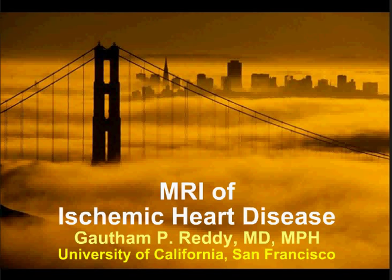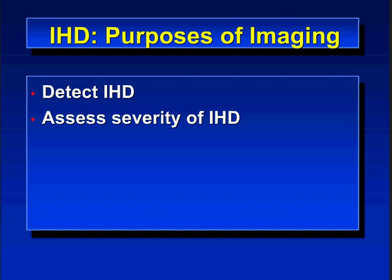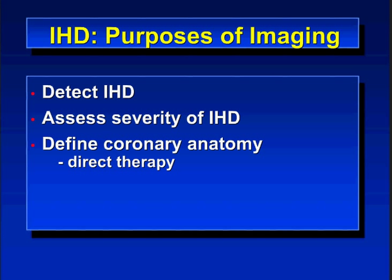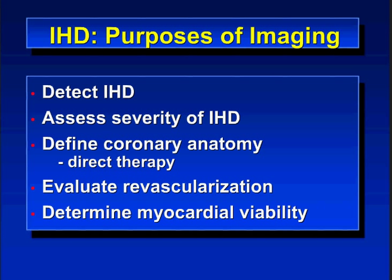This talk is about the MRI of ischemic heart disease. I'm not going to try to cover all topics in just 20 minutes, but I will cover what I think are some of the more important aspects. The purposes of imaging in ischemic heart disease are to detect disease, assess its severity, define coronary anatomy, and direct therapy. Cardiac cath is useful for directing therapy, and MR has the ability to evaluate revascularization and myocardial viability — in my opinion, the most important aspects.